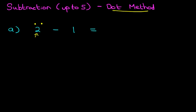Well, what we do is above the first number we draw dots with what the number says. So in this case the number is 2. So we are going to put one dot here and the second one here. We've got two dots because the number is 2.